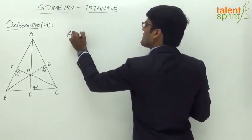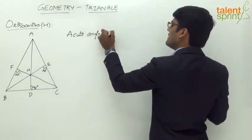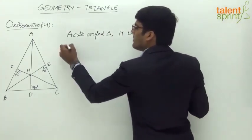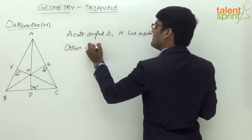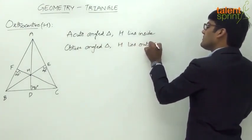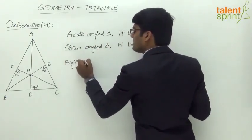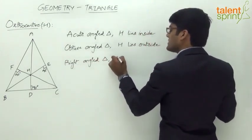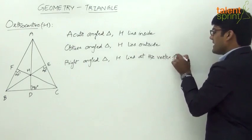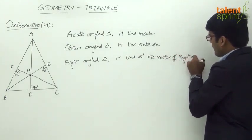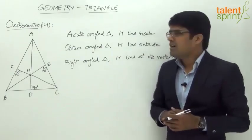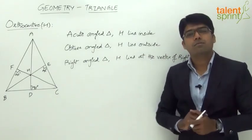For an acute angled triangle, the orthocenter H lies inside the triangle. For an obtuse angle triangle where one angle is greater than 90 degrees, the orthocenter H lies outside the triangle. For a right angle triangle, the orthocenter H lies at the vertex which has the right angle. For example, if ABC is a right angle triangle with the right angle at vertex B, then the orthocenter is vertex B.